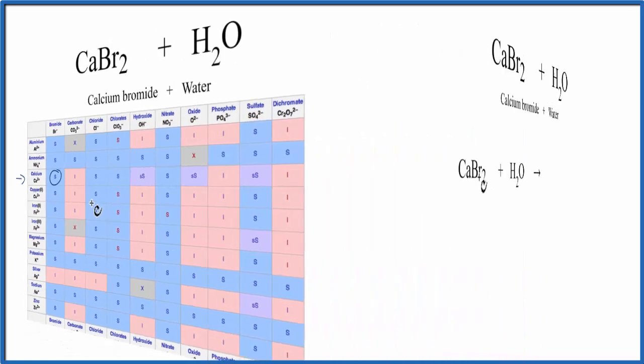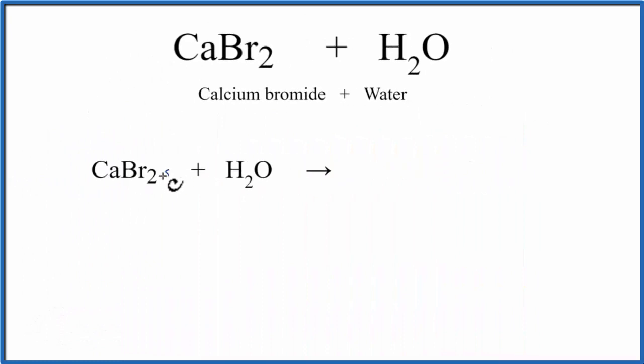So let's go back to our equation. We place solid calcium bromide in liquid water, and it dissociates, it breaks apart into its ions. That's the Ca2+ and the bromide ion, Br minus.